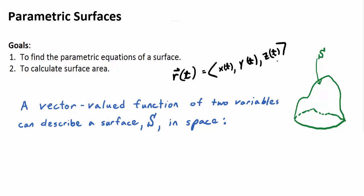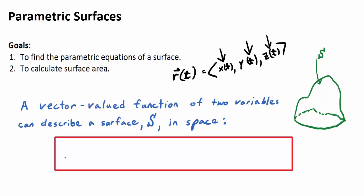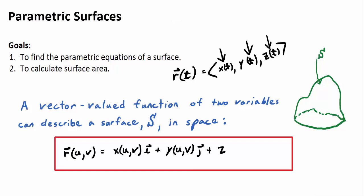Now, when we have two inputs for each coordinate function — two inputs instead of one — it should intuitively seem reasonable that it describes a surface in space. Our vector-valued function for a surface S is given by R of U, V equals X(U,V) I + Y(U,V) J + Z(U,V) K. That's the parametric representation of a surface in the form of a vector-valued function.